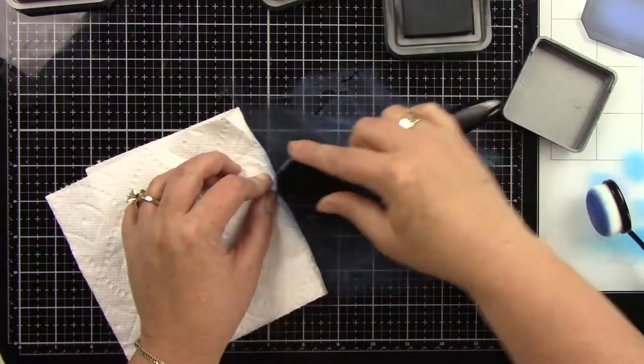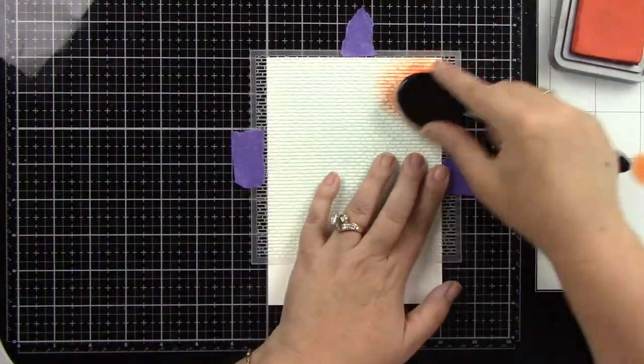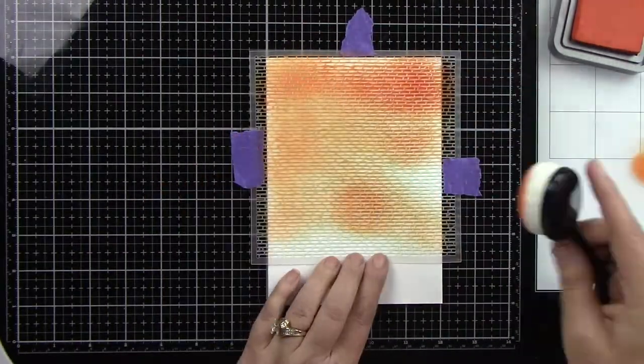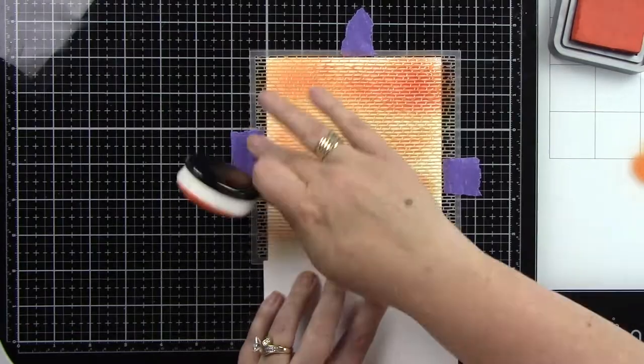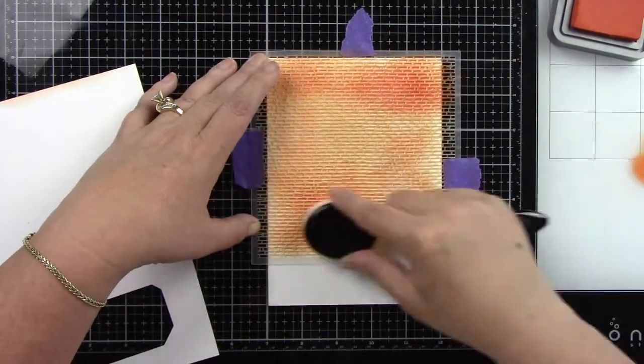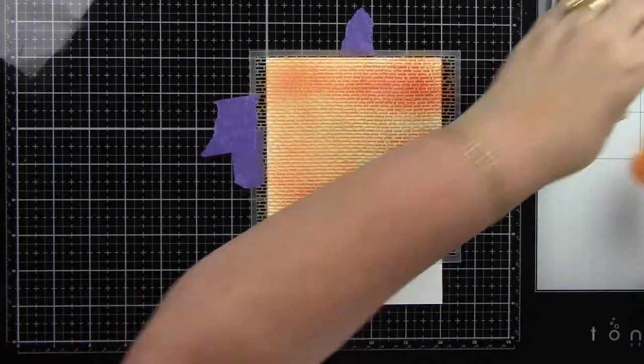I'm using Black Soot for the strap of the apron card. Now I have a 5x7 white card base, and I'm coming in with Crackling Campfire using the Salvaged Bricks Background stencil, making it dark in some areas and lighter in other areas. Then I'm coming in with Fired Brick and just kind of doing the same thing.